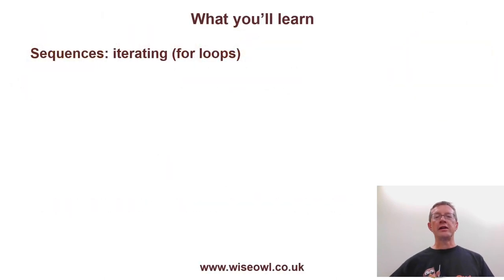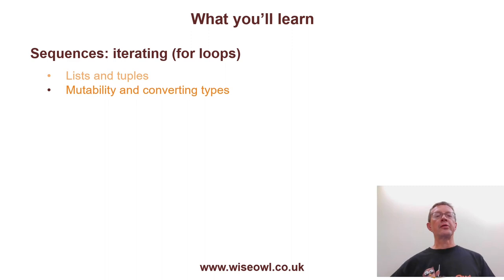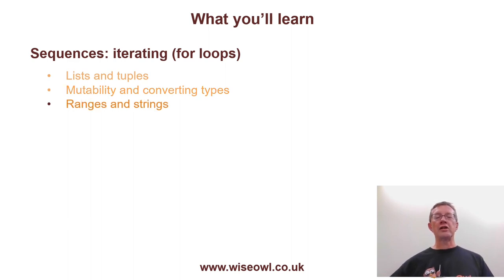Here's what you'll learn in this tutorial. We'll begin by looking at lists and tuples, two of the main types of sequences that you can create. Then I'll show the difference between them — basically that one is mutable and the other isn't — and we'll look at how you can convert the data type from one to the other. We'll then look at ranges and strings, which we've already seen in previous tutorials, but they're the other two types of sequences you can create.